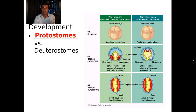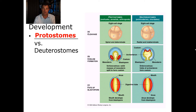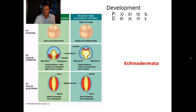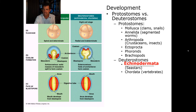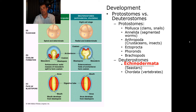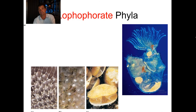In deuterostomes — which includes us — the second opening becomes the mouth. So in humans, the first hole you had on your body ends up being your anus, whereas in a worm it would end up being the mouth. There's a big group of protostomes that includes the Mollusca — clams and snails — annelids, arthropods, and so on. Deuterostomes are a much smaller group in terms of diversity, including the Echinodermata and eventually the Chordata, which leads us to vertebrates.